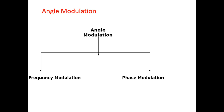In modulation, there is a type normally called angle modulation, which is basically a combination of frequency modulation and phase modulation. Frequency modulation is a technique in which the frequency of the carrier is adjusted in accordance with the instantaneous value of the modulating signal. In phase modulation, the phase of the carrier signal is adjusted in accordance with the instantaneous value of the modulating signal. These two techniques together are called angle modulation.